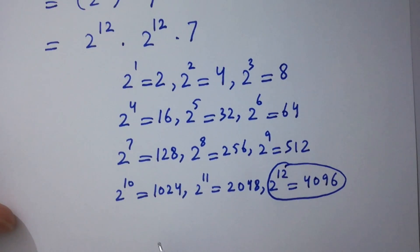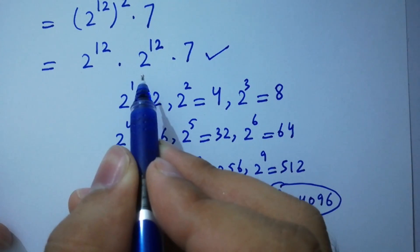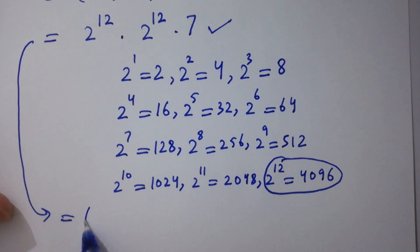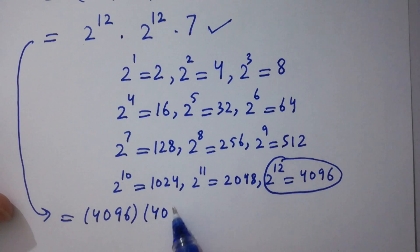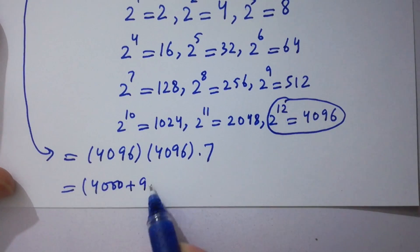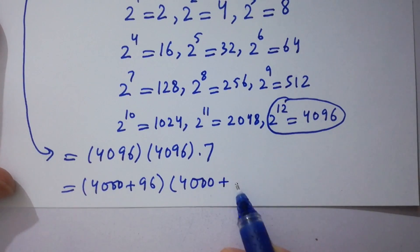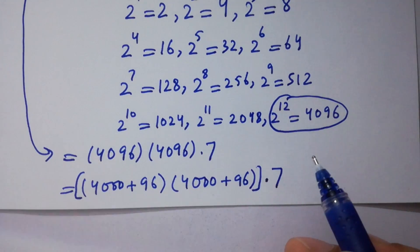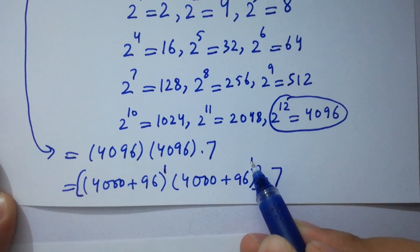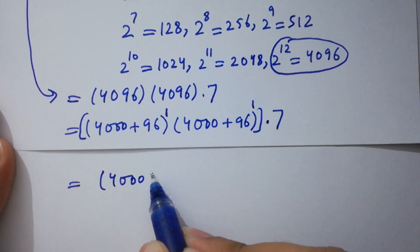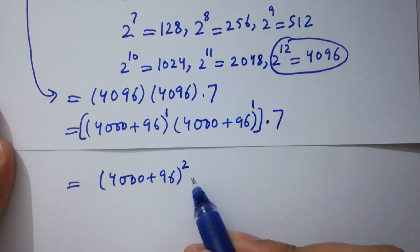It means here 2 to the power 12 times 2 to the power 12 times 7 equals 4096 times 4096 times 7. I hope you understood. Since both factors have the same base and power 1, the powers add, so it can be written as 4096 squared times 7.